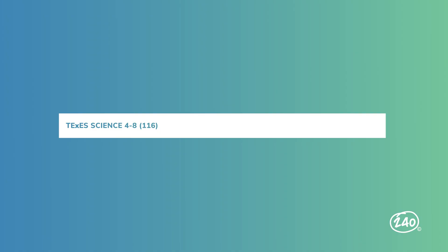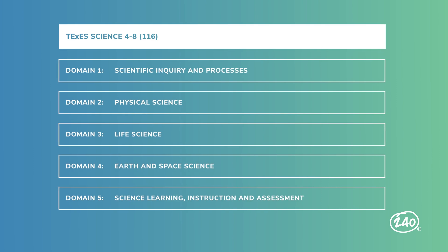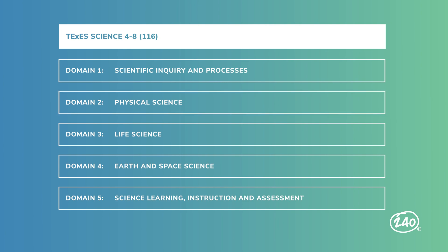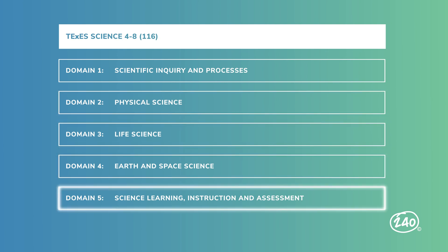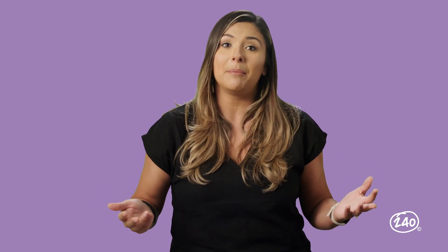The Science 4 through 8 consists of five areas called domains: scientific inquiry and processes, physical science, life science, earth and space science, and science learning, instruction and assessment. Now these seem pretty straightforward, but entire college courses are taught on each one of them. So I'm going to help you break down exactly what you need to know for each area. Let's dive in.